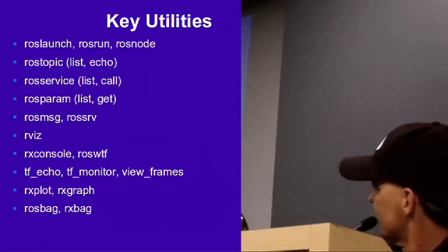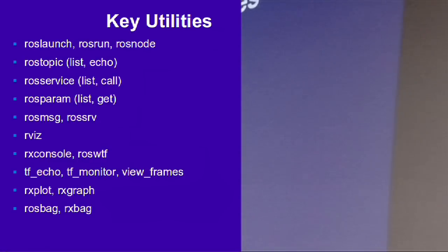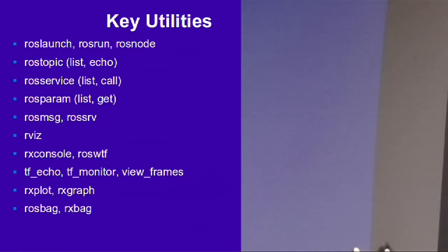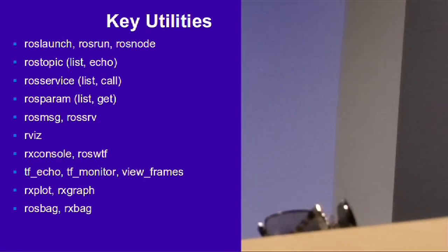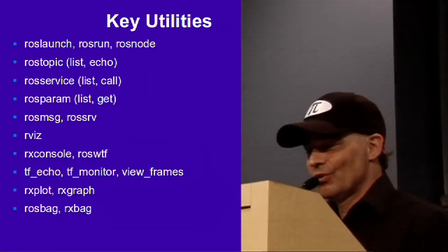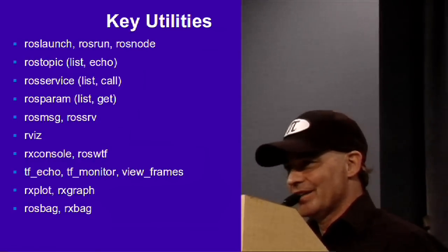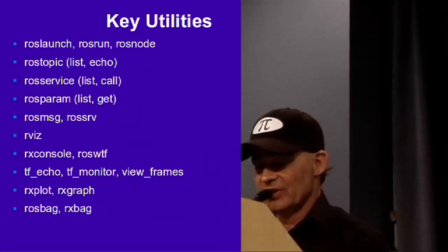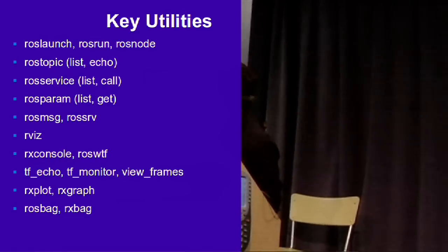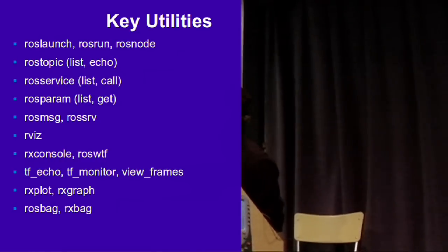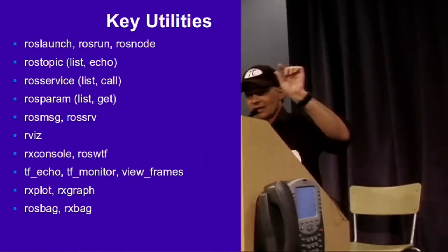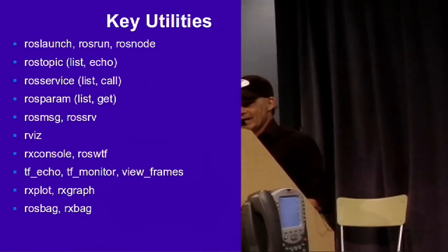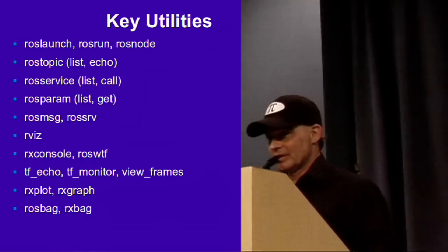ROS service does the same thing. RViz is the visualization tool. ROS WTF is just my favorite name of a command. The TF echo, monitor, and view frames commands are for sorting out all those complicated transformation frames, especially when you have a multi-jointed arm that you're trying to control. Rxplot and Rxgraph are kind of neat - Rxgraph gives you that neat little connected line picture of the nodes you're currently running.